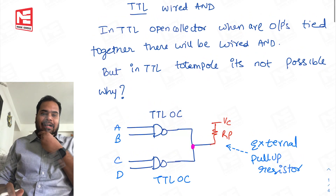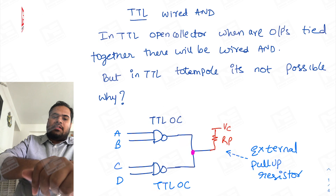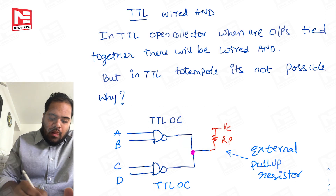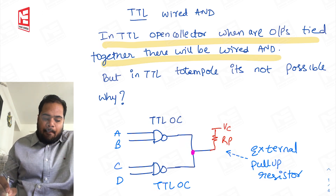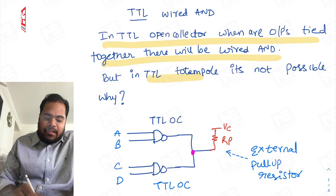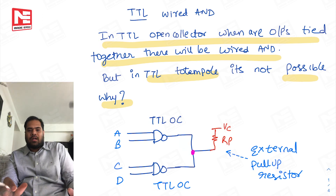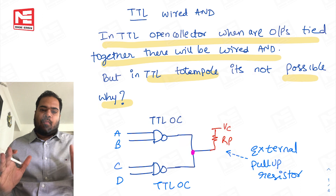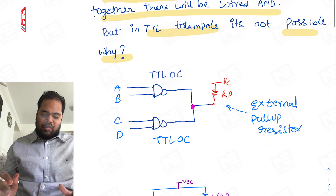In a TTL circuit, we have a wired AND operation using an open collector. Now let us take up a simple question: in TTL open collector, the outputs are tied together giving a wired AND operation, but in TTL totem pole if you do this it is not possible — why? Let us see this doubt that a student has raised.